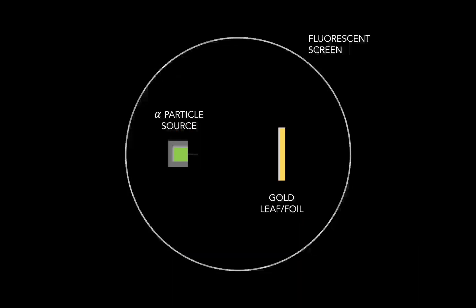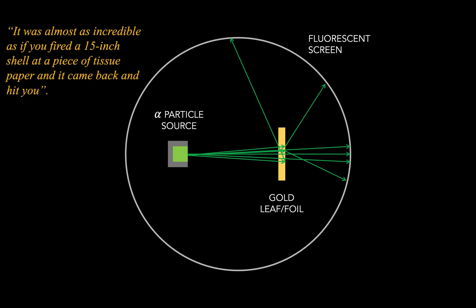Now, that is what happened most of the time, but some of the time, the alpha particles were deflected by some pretty large angles. And in some very rare instances, and we're talking one in 8000 times, the particles would be deflected backwards, in other words, by more than 90 degrees. Now, this was quite astonishing. In Rutherford's own words, it was almost as incredible as if you fired a 15-inch shell at a piece of tissue paper, and it came back and hit you.